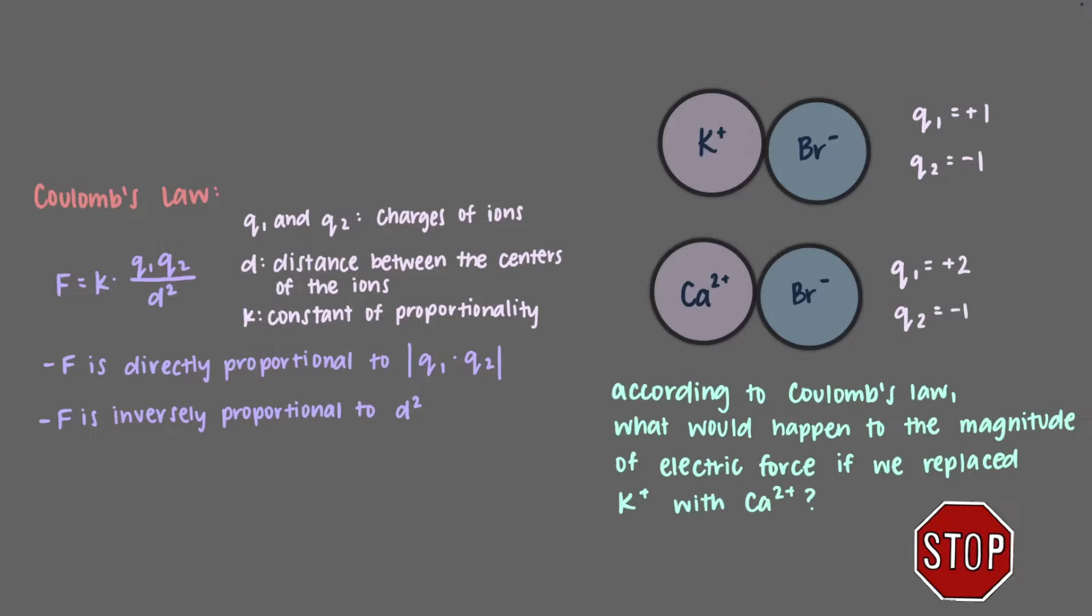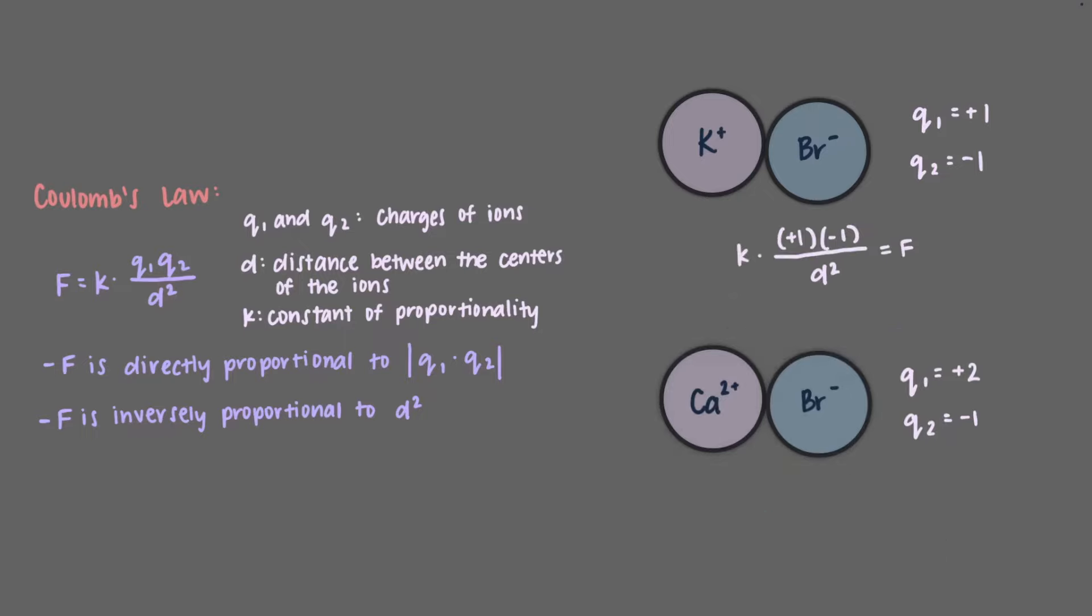According to Coulomb's Law, what would happen to the magnitude of electric force if we replaced the potassium ion with a calcium ion, which has a plus two charge but is about the same size? We said earlier that the electric force is directly proportional to the magnitude of the product of ionic charges. This means that as this magnitude increases, so will the electric force.